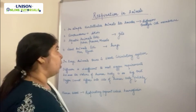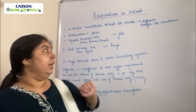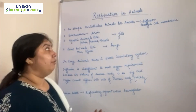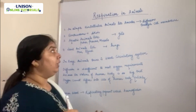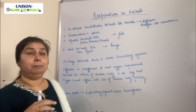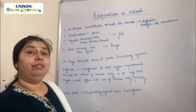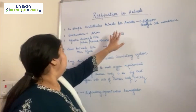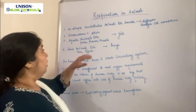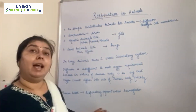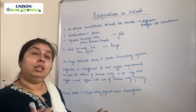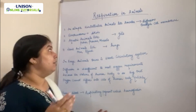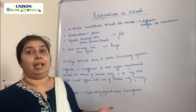In aquatic animals like fishes, prawns and mussels, the respiratory organ is gills. Gills have a special ability to extract dissolved oxygen from water. Then, with the help of the blood circulatory system, oxygen goes to each and every cell of the body, and carbon dioxide is expelled out. That is why aquatic animals have gills, and when taken out of water, their gills cannot extract oxygen from air — that ability belongs to lungs — so aquatic animals die when taken out of water.